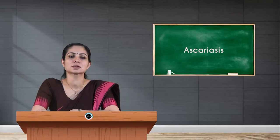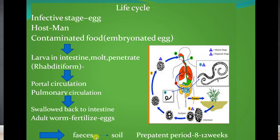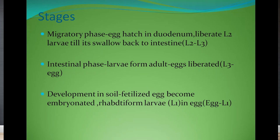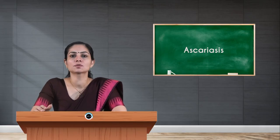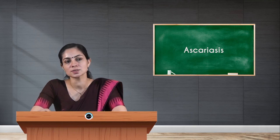In the intestine, male and female adult worms develop. After fertilization, the female parasite begins liberating eggs, which exit the body through fecal matter and contaminate the soil again. The infection occurs through feco-oral contamination — feces contaminate soil, soil contaminates food, and the life cycle repeats. The time taken from the infective egg stage to becoming an infective stage again — called the pre-patent period — is approximately 8 to 12 weeks.